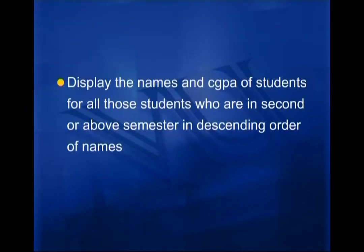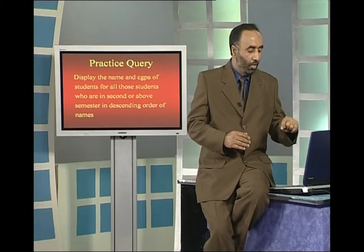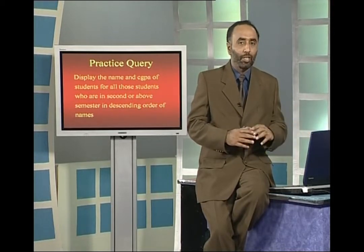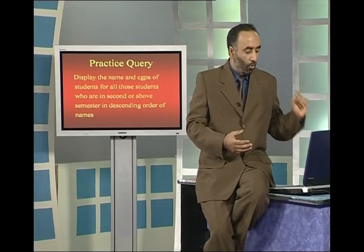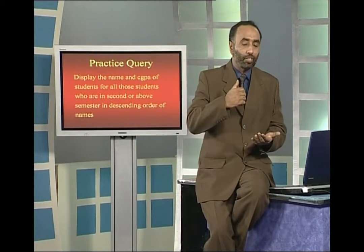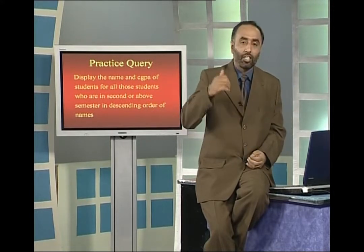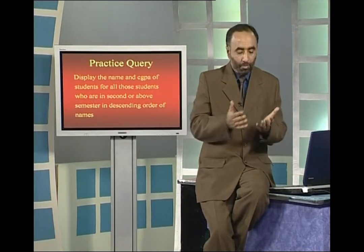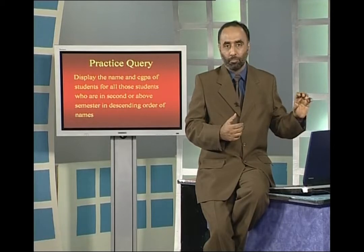Here is a practice query: Display the name and CGPA of students for all those students who are in the second or above semesters, in the descending order of names. If you look at this requirement, we need name and CGPA. We only need records for students in the second or above semesters, which means a WHERE clause is needed. The final part says in the descending order of names. So this requirement has three distinct parts, and you should be able to write the appropriate query.